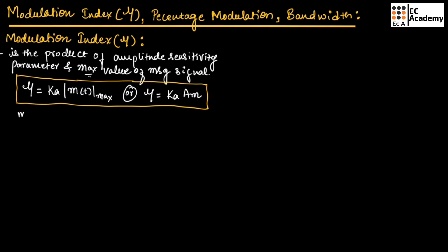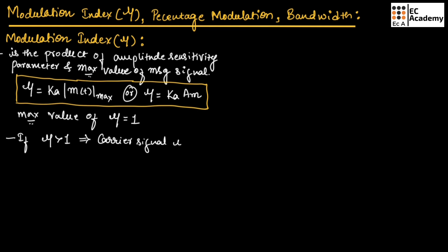The maximum value of modulation index is equal to 1. If the modulation index is greater than 1, then the carrier signal is over-modulated.